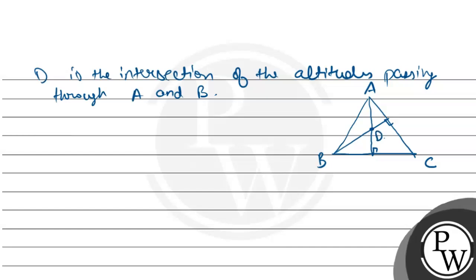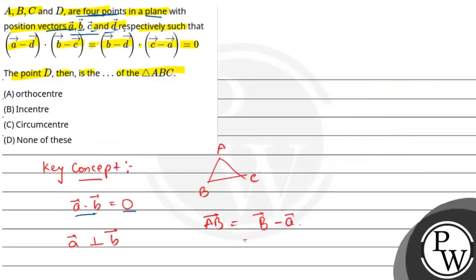The intersection of D is the orthocenter of triangle ABC. So orthocenter, option A, is the correct answer for this question. I hope you understood well, best of luck.